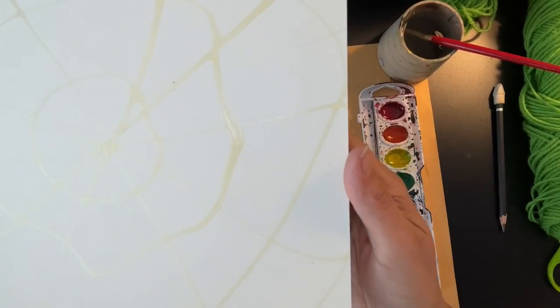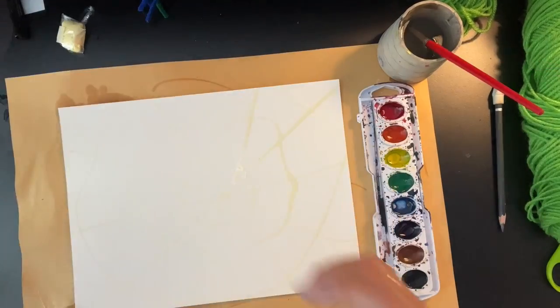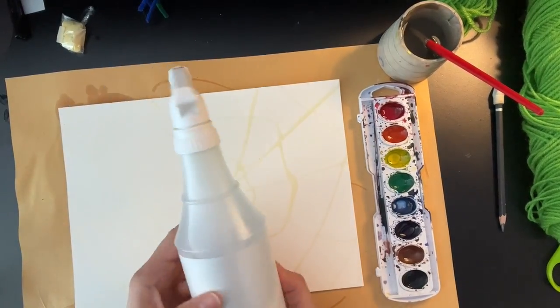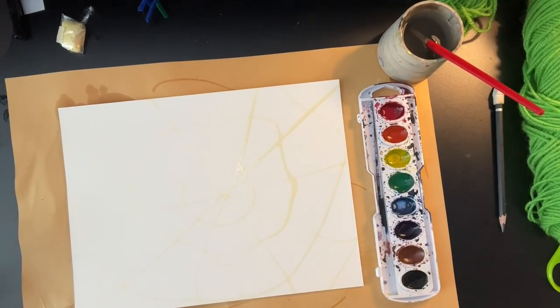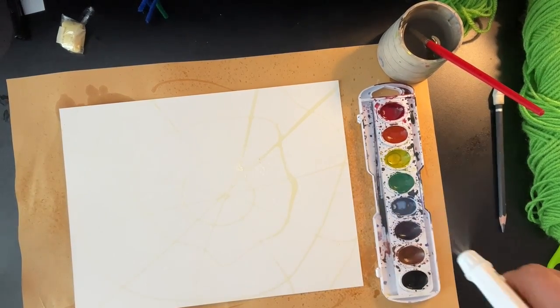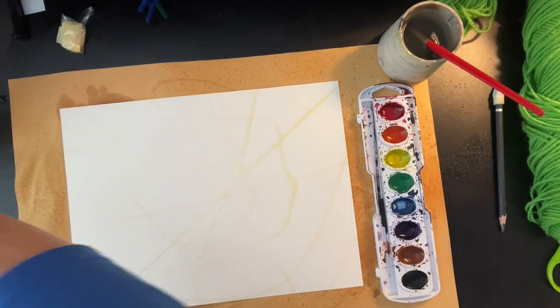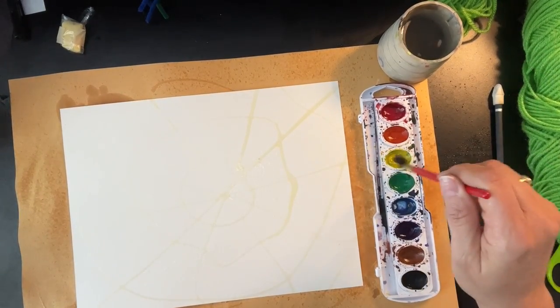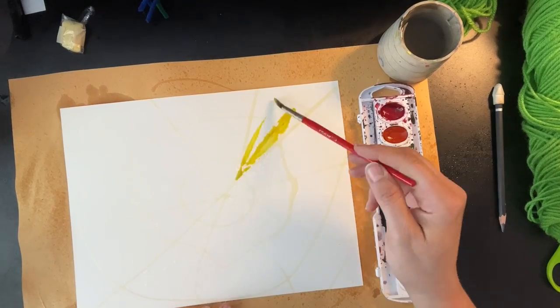Once it's dry, we're going to add a wash of watercolor. I'm going to spritz my paper and my paint tray and pick something that's not super dark. Lights and medium colors are fine.